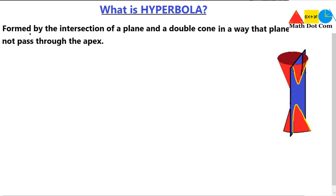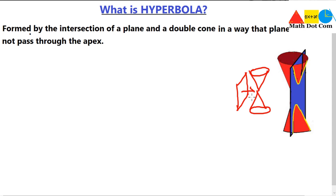Hyperbola is formed by the intersection of a plane and a double cone in a way that the plane does not pass through the apex. If we have a plane like this, and two cones placed one above the other, we intersect this plane with the double cone in a way that the plane does not pass through the apex.